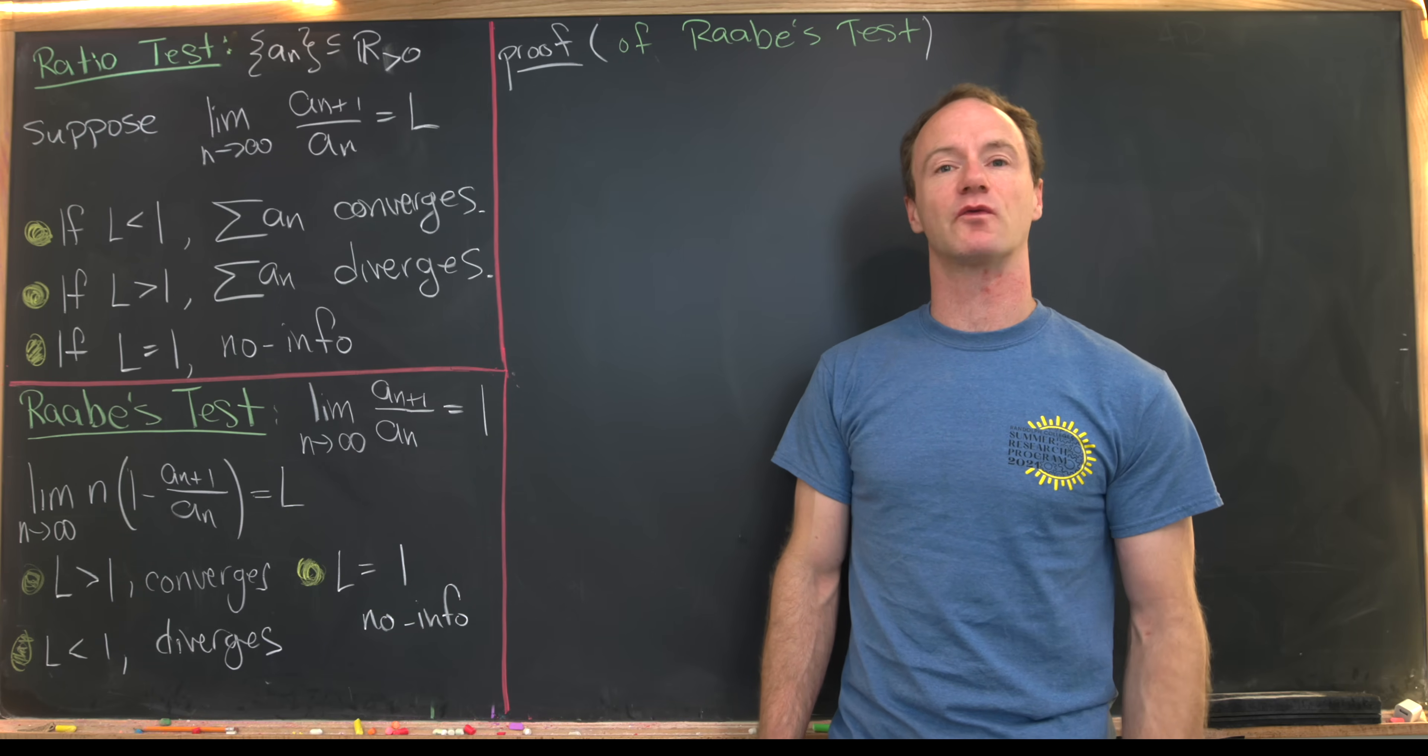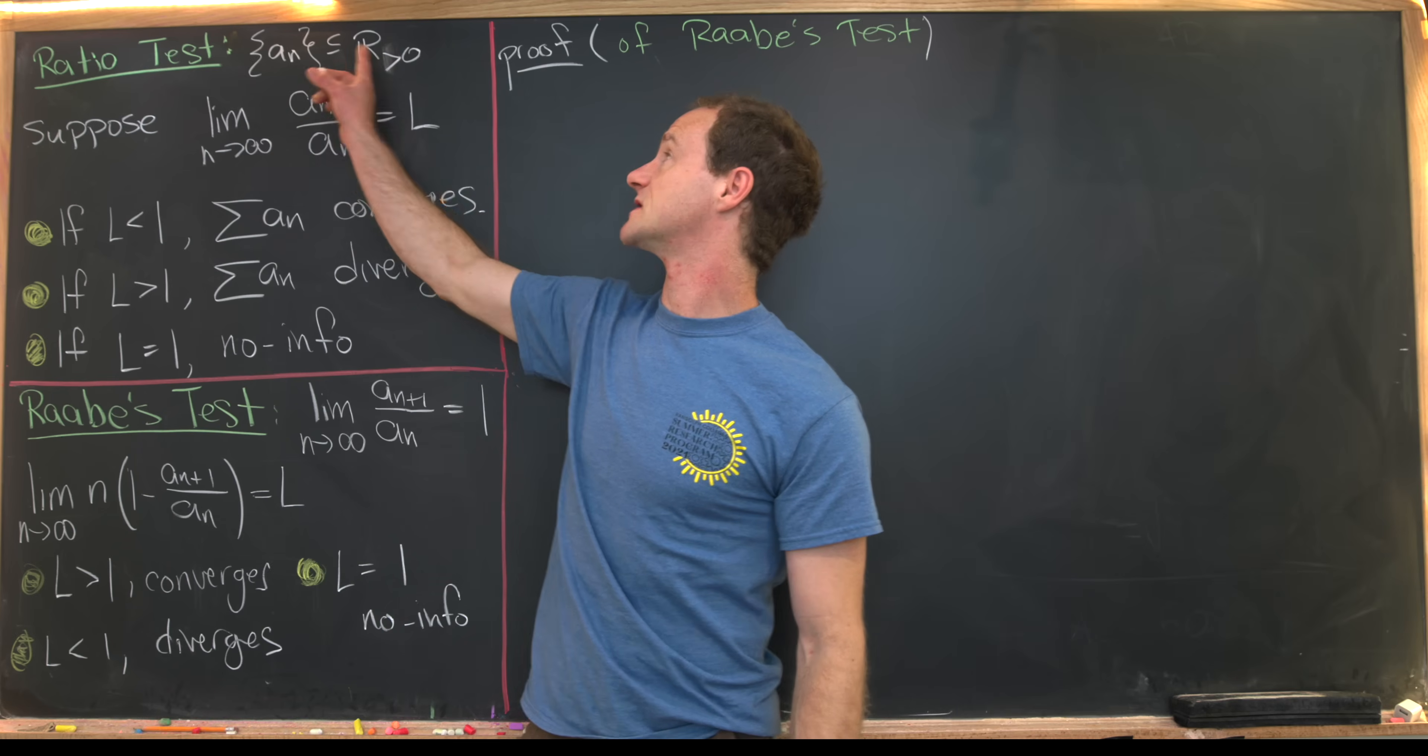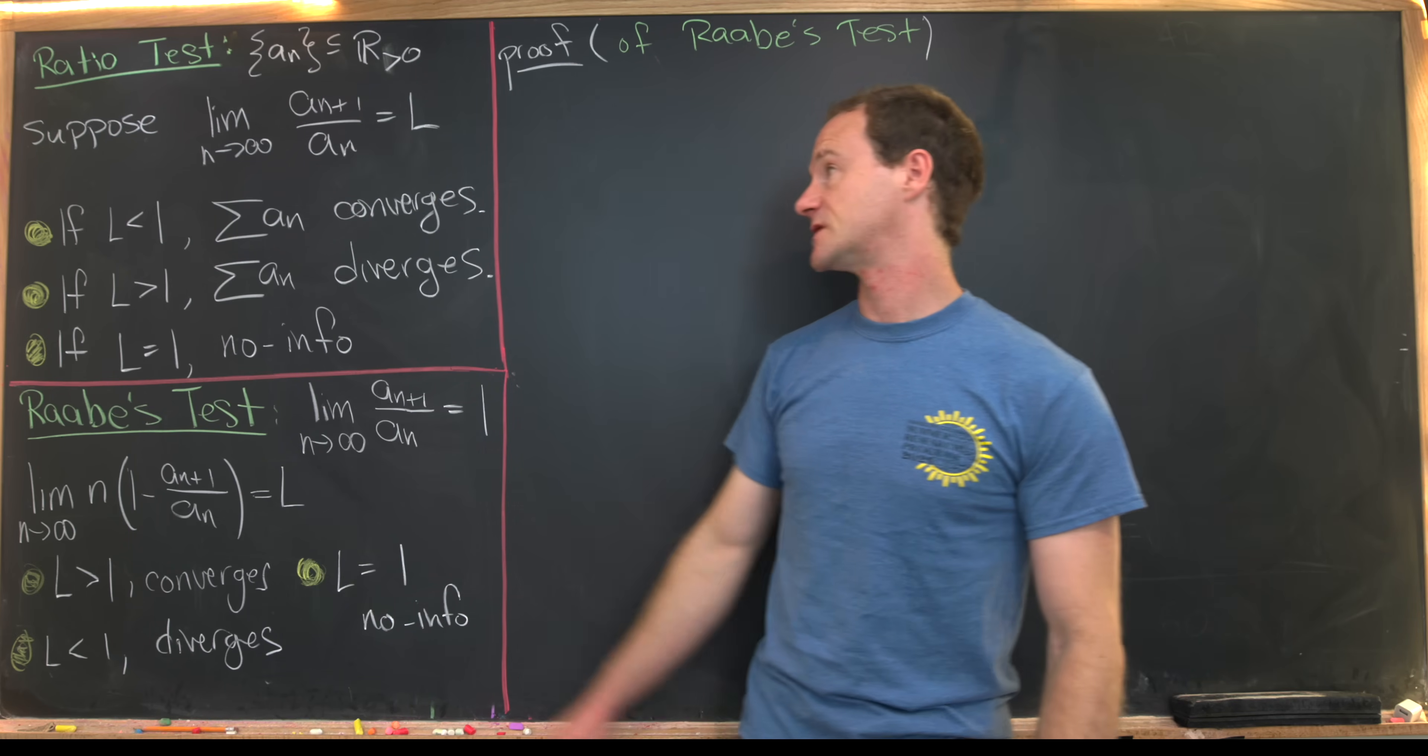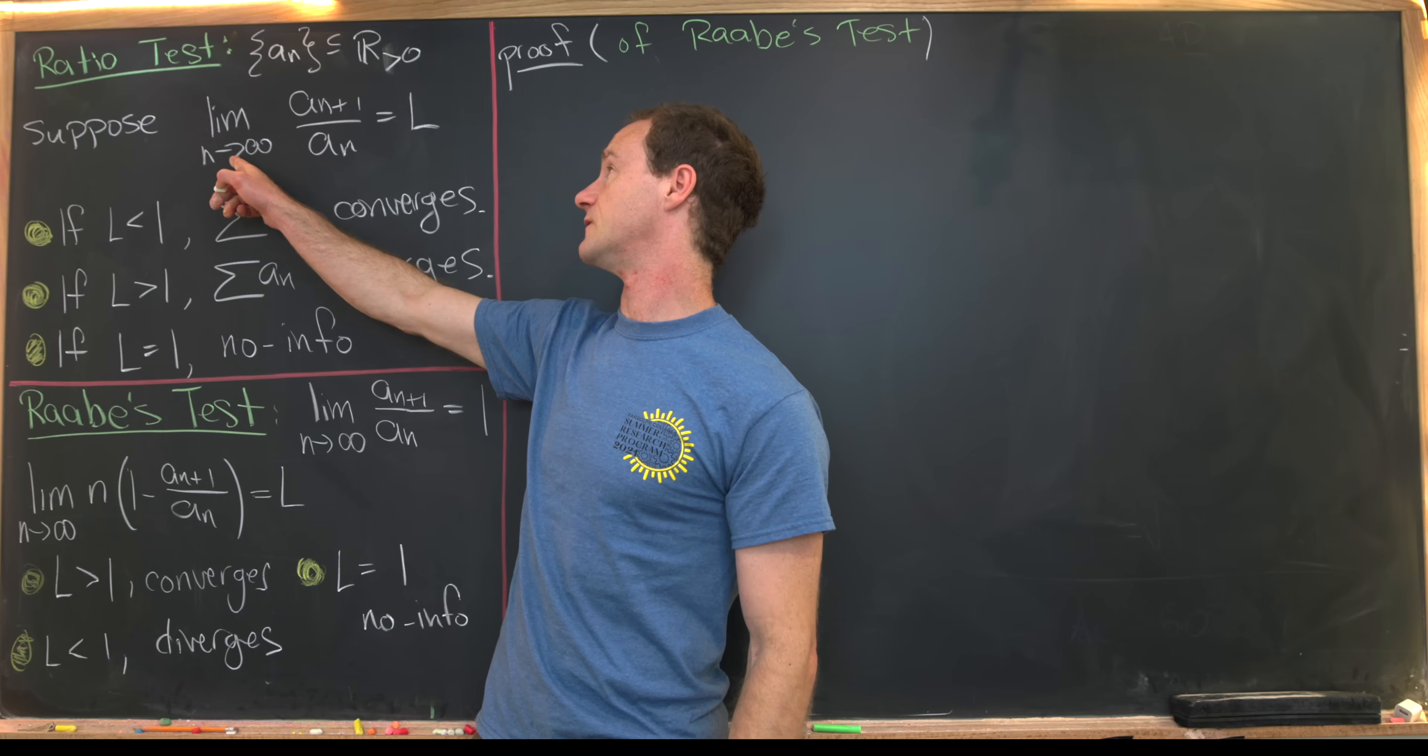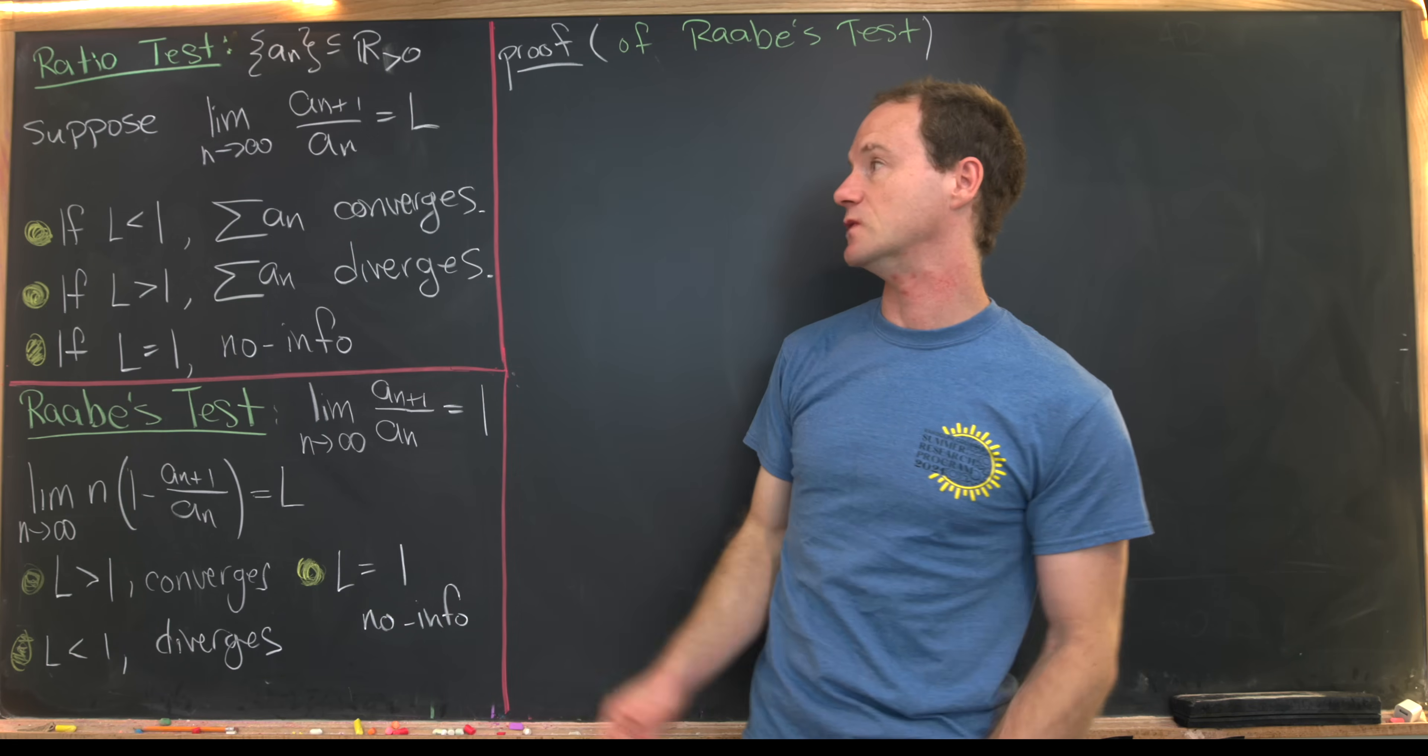Before we look at it, let's look at the ratio test which is a lot more common. So let's say we've got a sequence of positive real numbers, we'll call them a_n. Next we want to suppose that the limit as n goes to infinity of a_{n+1}/a_n equals L.